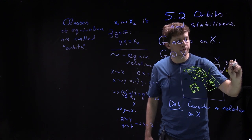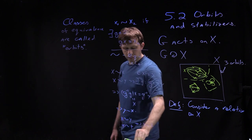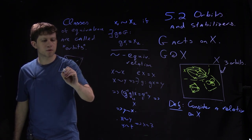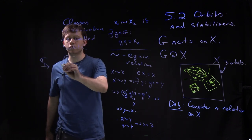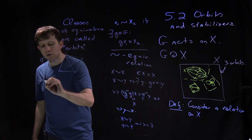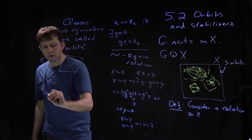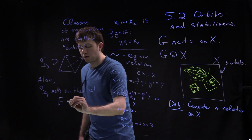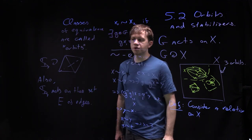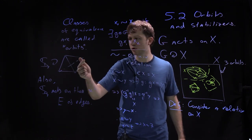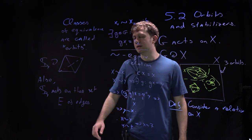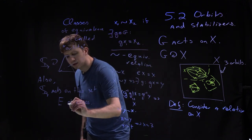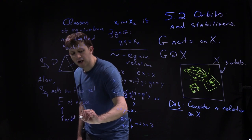For example, S₄ acts on vertices of the tetrahedron, which has one orbit since every vertex can be moved to any other. S₄ also acts on the set of edges E of the tetrahedron. This action also has just one orbit, since you can move any edge to any edge by rotation. One orbit means any element goes anywhere.